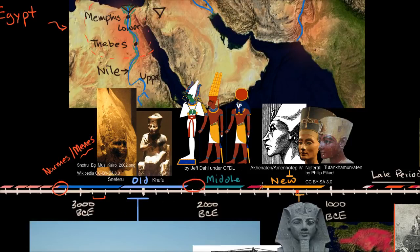In some of these intermediate periods, you have some foreign rule. It's hard to cover over 2,000 to 3,000 years in just a few minutes, but this will give you a sense of what ancient Egyptian civilization was all about.